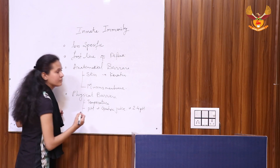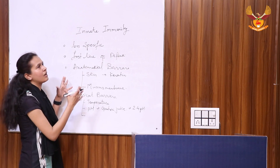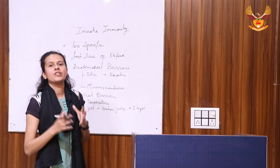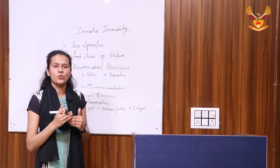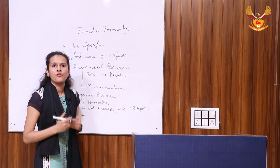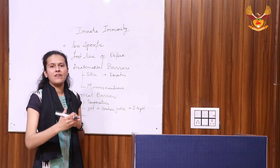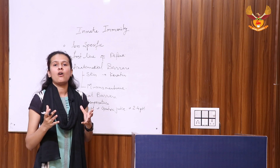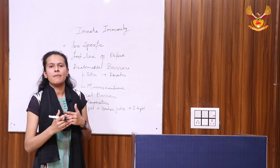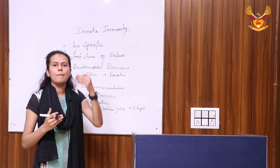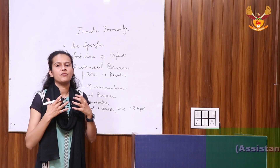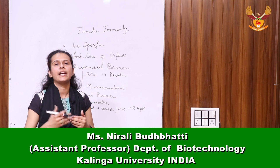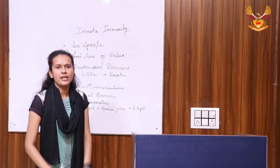So this is what innate immunity means — it tries to protect our body from the outside environment, just because our whole environment is full of pathogens and microorganisms. We need a barrier between our vital organisms and our environment. Thank you.